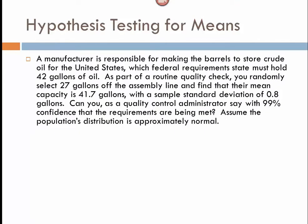So, here's an example we're going to go through and test this. A manufacturer is responsible for making the barrels to store crude oil for the United States, which federal requirements state must hold 42 gallons of oil. As part of a routine quality check, you randomly select 27 gallons off the assembly line and find that their mean capacity is 41.7, with a sample standard deviation of 0.8. Can you, as a quality control administrator, say with 99% confidence that the requirements are being met? Assume the population distribution is approximately normal.